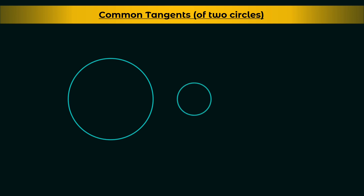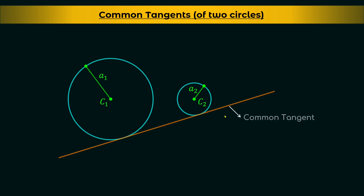Consider two circles with centers C1 and C2 and the radii A1 and A2 respectively. Now consider the following line. A tangent is nothing but a line that touches the circle at a single point. Here, this line touches both of the circles at a single point each, so it is tangent to both circles at the same time. Hence it is known as the common tangent of the two circles.